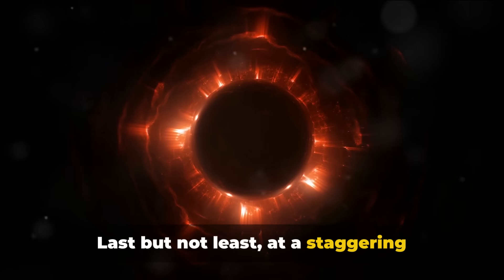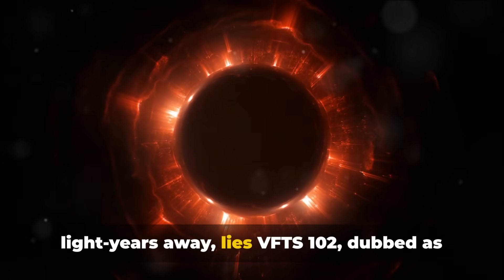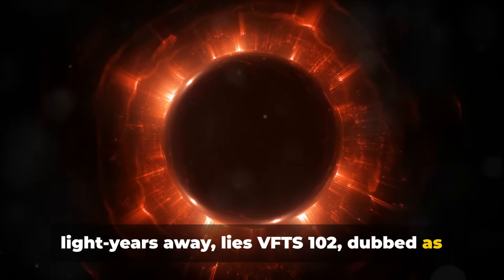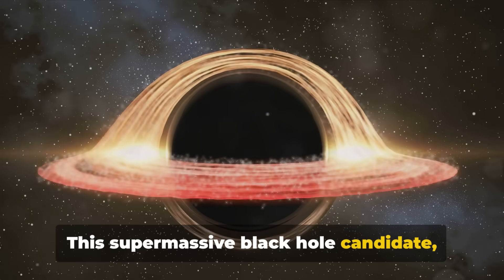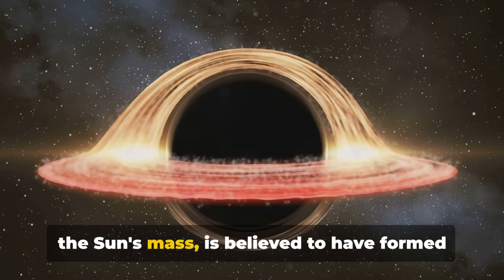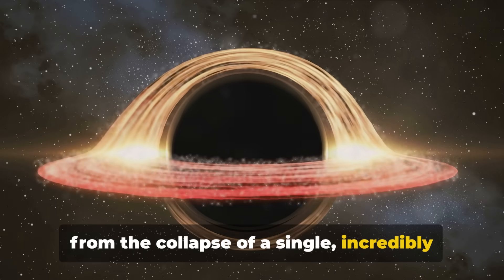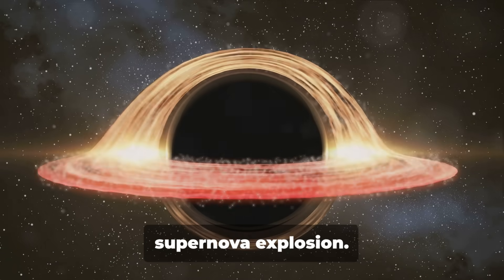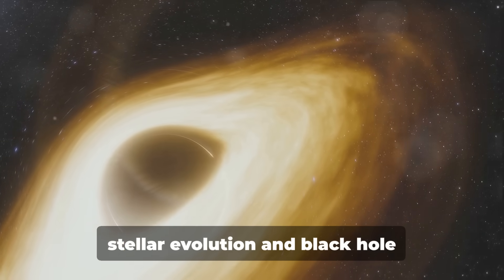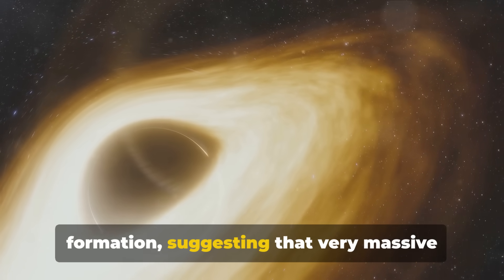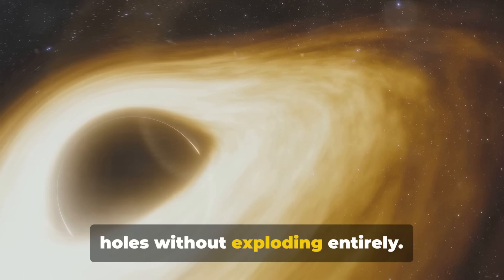Last but not least, at a staggering distance of 160,000 light years away, lies VFTS 102, dubbed the biggest bang. This supermassive black hole candidate, estimated to be around 200 times the sun's mass, is believed to have formed from the collapse of a single incredibly massive star, producing a record-breaking supernova explosion. This challenges our understanding of stellar evolution and black hole formation, suggesting that very massive stars can directly collapse into black holes without exploding entirely.